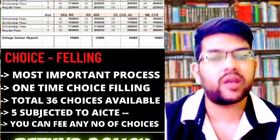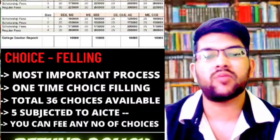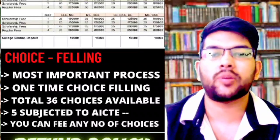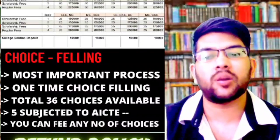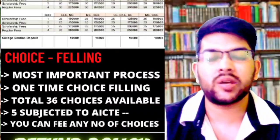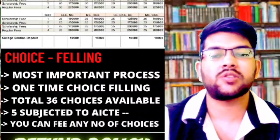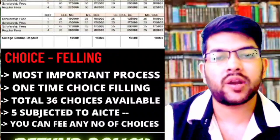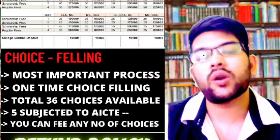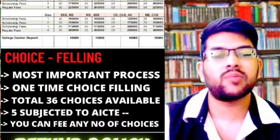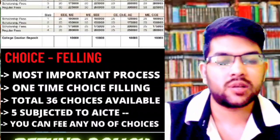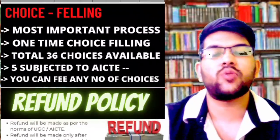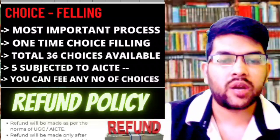Now let's talk about choice filling — the most important part of the process. With better choice filling you will be able to get the best slab as well as the best branch, which will also save money for your parents. Most importantly: choice filling is done only one time before the first round. The choices you fill will be considered for all remaining rounds — you will not be able to change them later. There are a total of 36 choices available; you can fill any number — minimum one, maximum 36. Five choices are subject to AICTE approval.